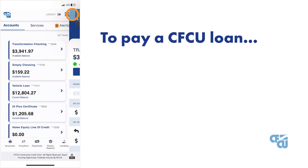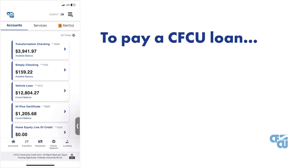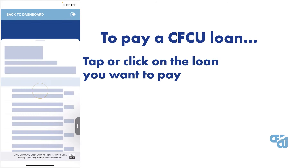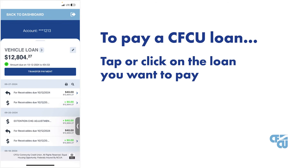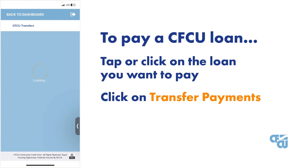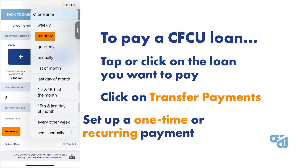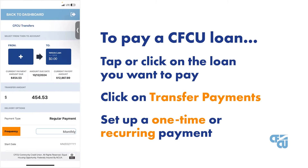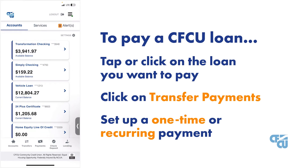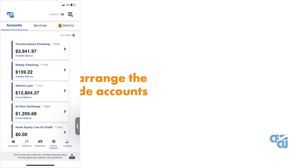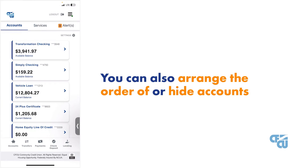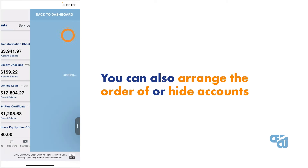To pay a CFCU loan from one of your CFCU accounts, tap or click on the loan you want to pay, then click on transfer payments. Here you can set up a one-time or recurring payment. You can also arrange the order of or hide accounts here.